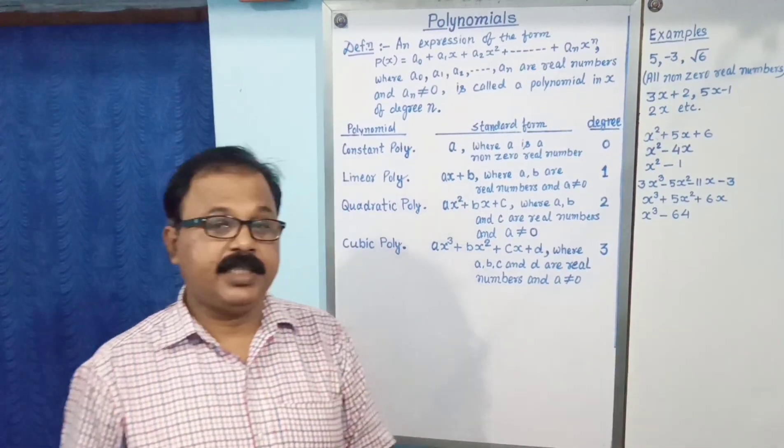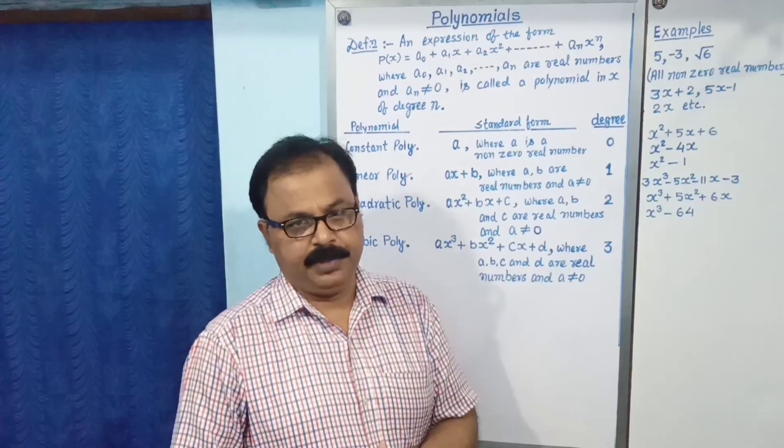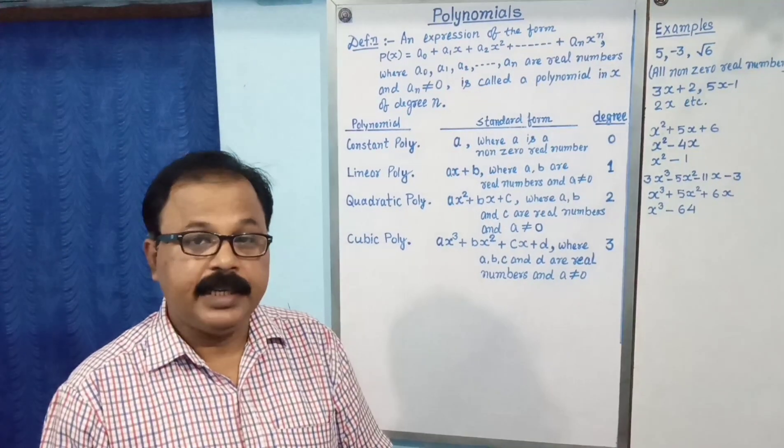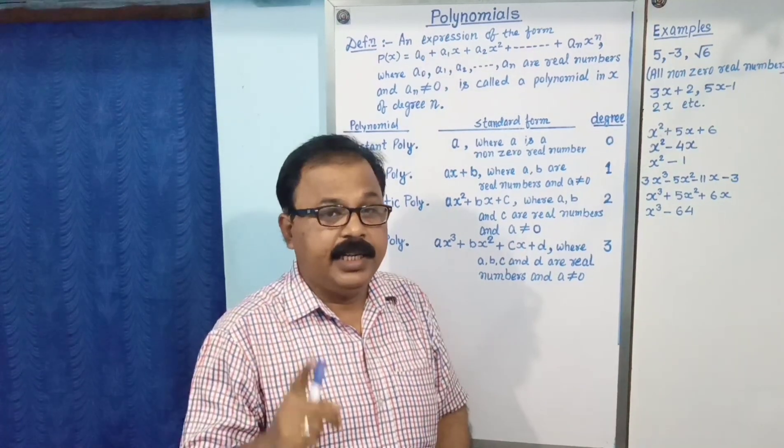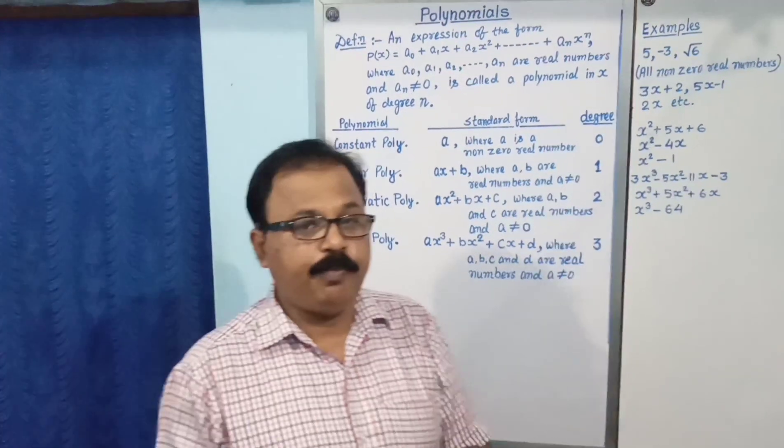You have studied about the zeros of polynomial. What is zeros of polynomial? In a polynomial, the value of x, generally. But, zero of polynomial, what is zero of polynomial?